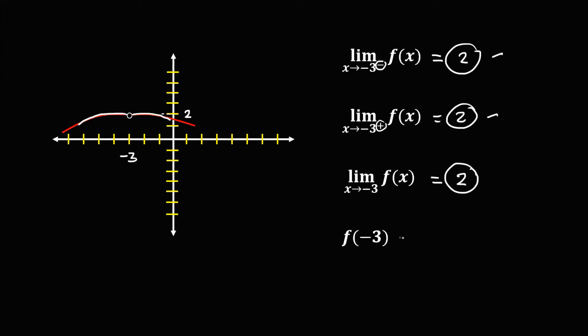And for this function, f of negative 3 — if x is equal to negative 3, since there is no shaded circle, therefore this function does not exist.